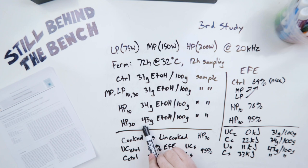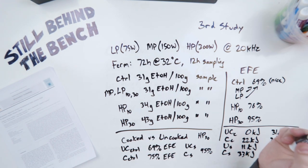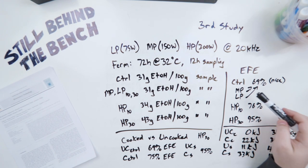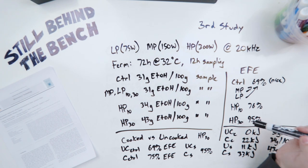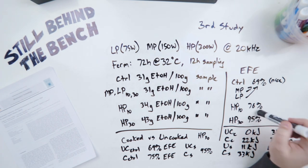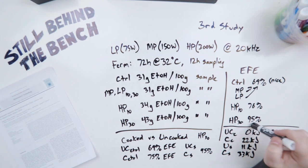The high power at 10 seconds generated 34 grams of ethanol per 100 grams and then their high power at 30 generated 43 grams of ethanol per 100 grams of sample. That's actually pretty good. In terms of percentages, the control, the medium power, and the low power were about 69% efficient. The high power at 10 seconds was 76% efficient, and the high power at 30 seconds was 95% efficient.